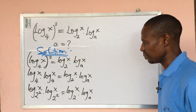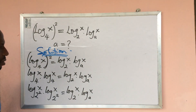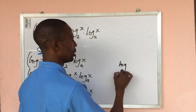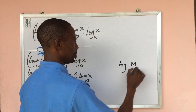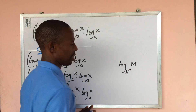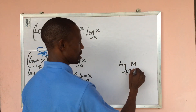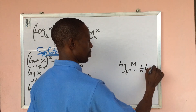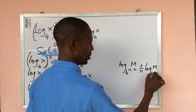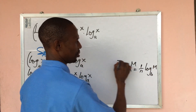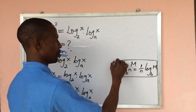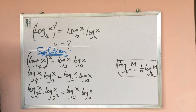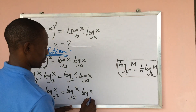According to the law of logarithms, if you have log m base b to the power of n, this is equal to one over n times log m base b. Using this rule, we can rewrite the expression.